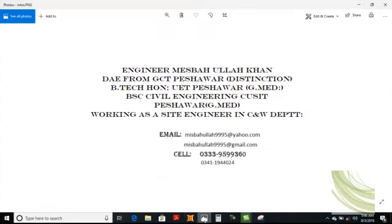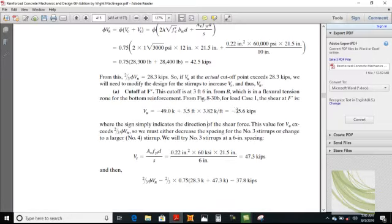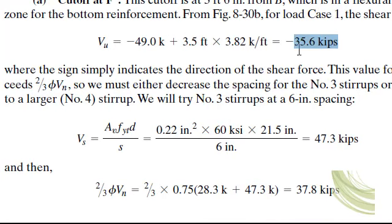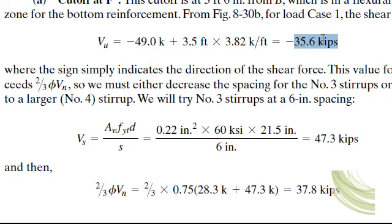Point F lies at a distance of 3.58 feet from support B, or 21.5 feet from support A. They determined Vu equal to 35.6 kips, which exceeds 28.3 kips — two-thirds of phi Vn. The sign simply indicates direction; focus on the value. Since Vu exceeds two-thirds of phi Vn, we need to modify the design: either decrease the spacing for number 3 stirrups or change to a larger stirrup. We try number 3 stirrups at 6 inches instead.